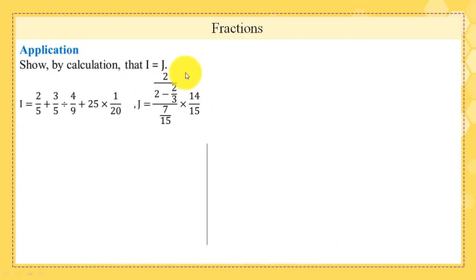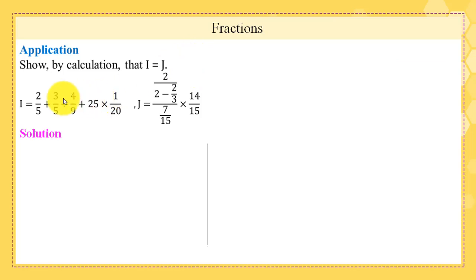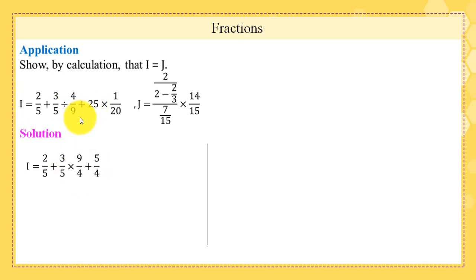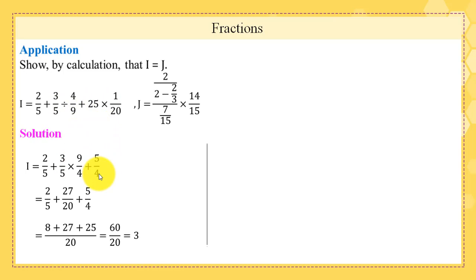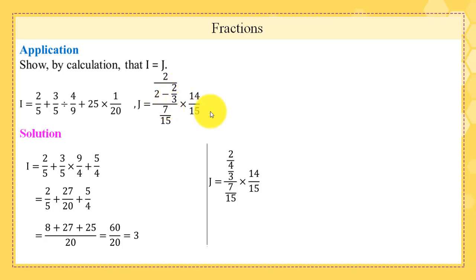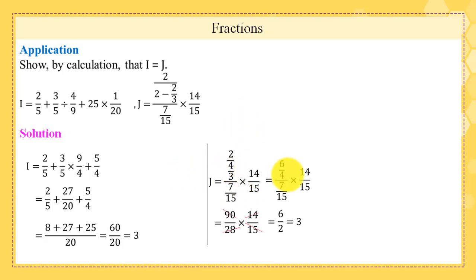This is an application: show by calculation that i = j. Please pause the video and try to solve. Solution: first we calculate i using order of operations — start with multiplication, then addition — and we get i = 16/20 = 3. Second, we calculate j the same way and find j = 6/2 = 3. Therefore i = j.